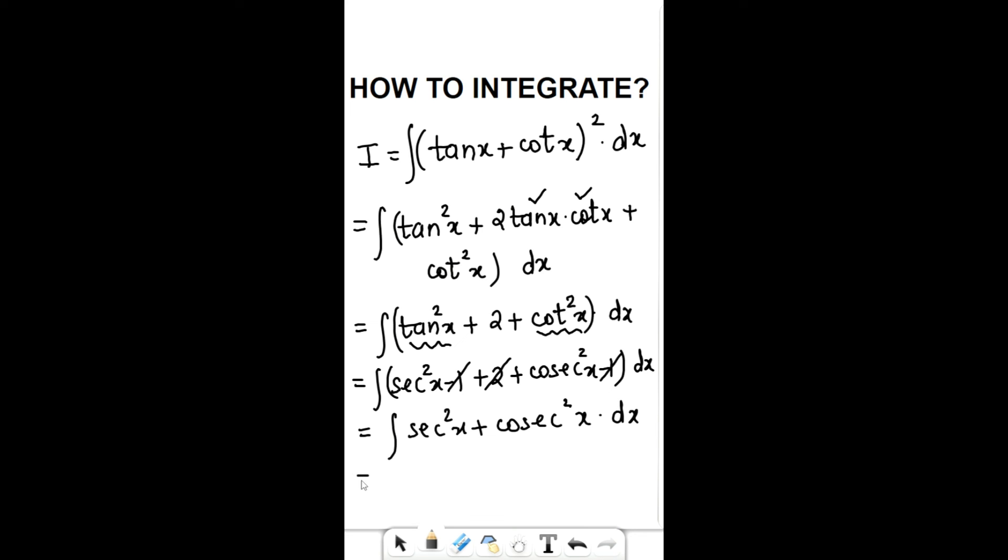The integration of sec²x is tan x and the integration of cosec²x is -cot x + c. This is how you can integrate this. Hope you like this video, thanks for watching.